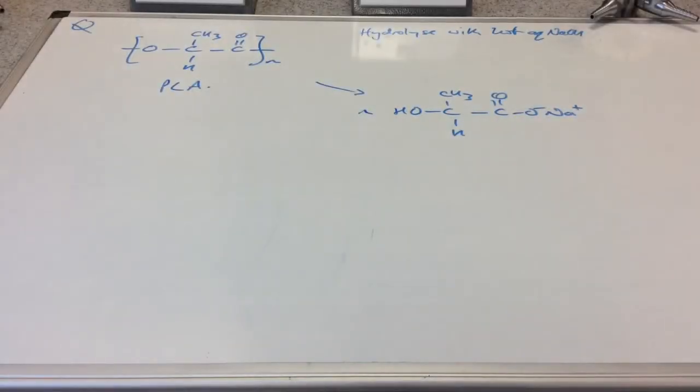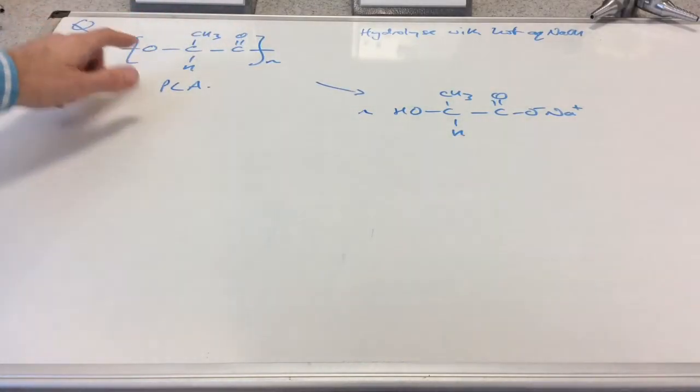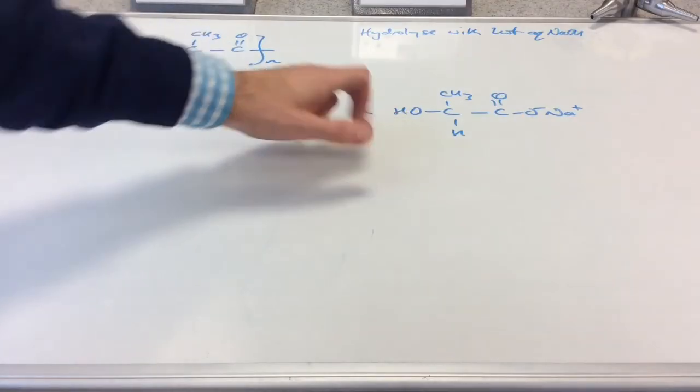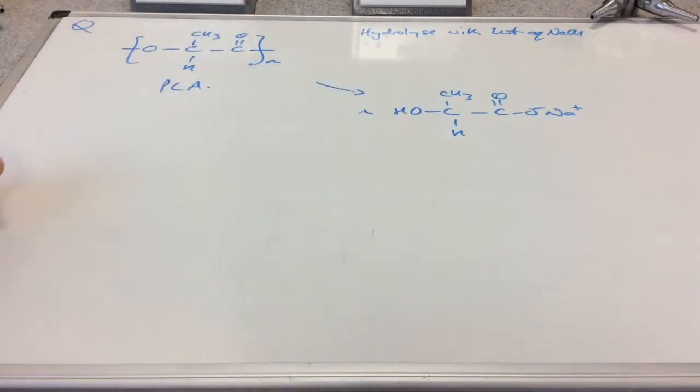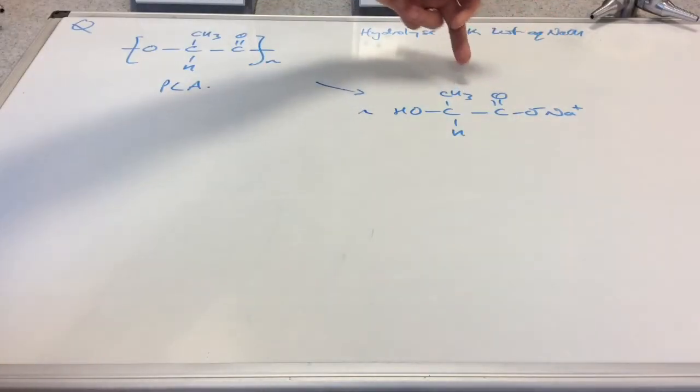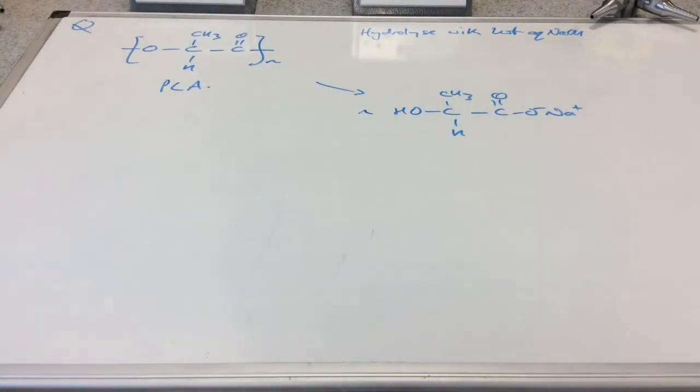There's the structure of the product. If you think about it, these bonds have broken here. So on this O, we put the H and that turns back into an alcohol group. Initially, this would become a carboxylic acid. But then we've got to factor in the fact that there's sodium ions present from the base. They would replace that H+ ion from the acid and form the sodium salt.